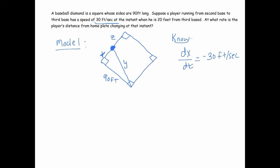And so what do we want? We want the rate at which his distance from home plate is changing at that instant. So we want dy dt. Now at that instant means when he's 20 feet from third base, that means when x equals 20.